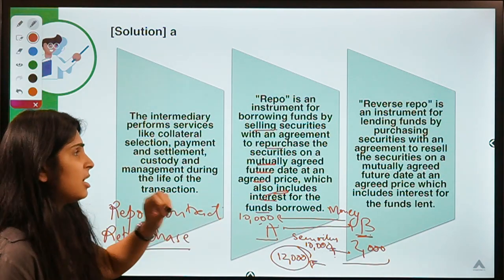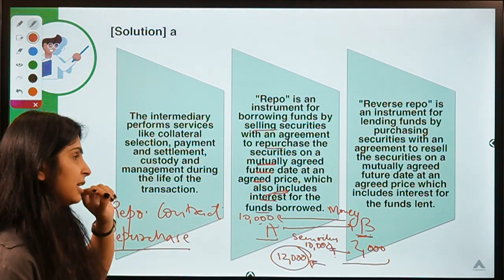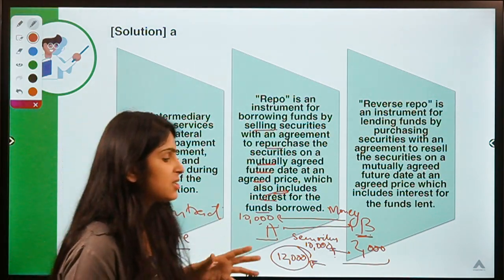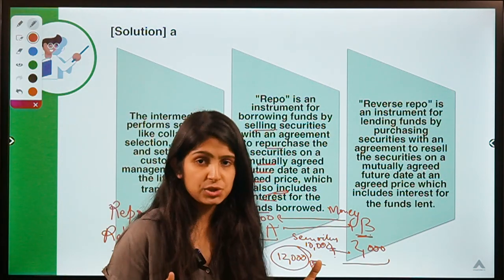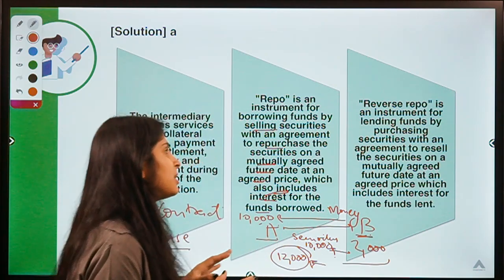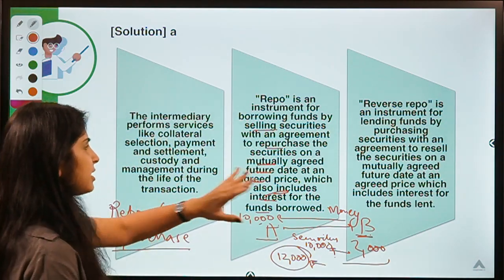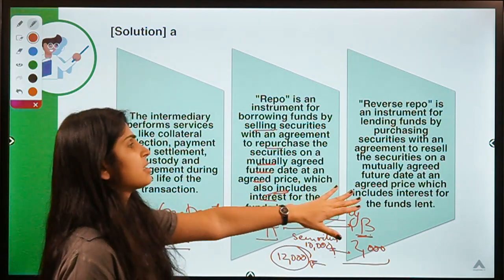A repo is an instrument for borrowing funds by selling a security with an agreement to repurchase the securities on a mutually agreed future date at an agreed price, which also includes interest for the borrowed funds. The difference of 2,000 acts as interest that B earns for lending money on the basis of securities. That is a repo contract. Now where does TREPS come into the picture?